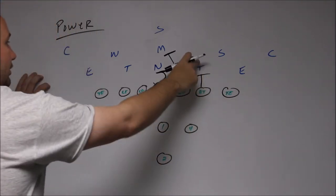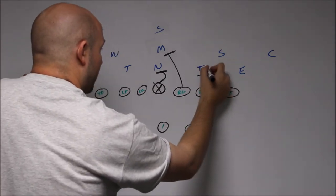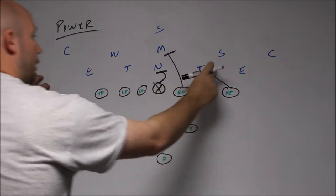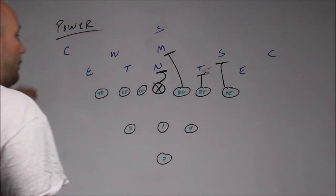Now if this defensive tackle is tough to block or they're slanting, you could have this tight end double team him. Have the tight end and the right tackle double team this kid. If your tackle could handle him, great. Then we want him to work onto linebacker.